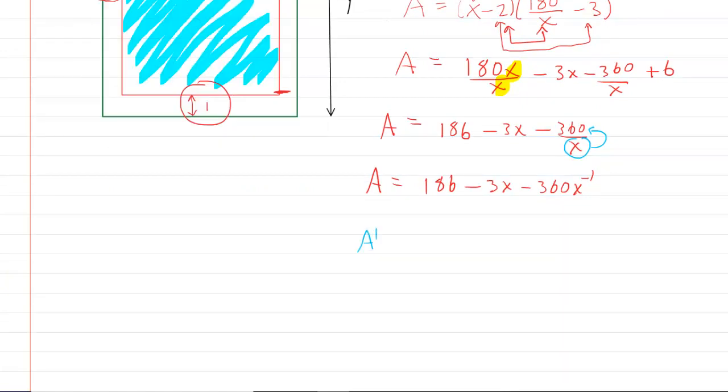We can write this as A prime. The derivative of a constant is just 0. The derivative of minus 3X is negative 3. And then here you've got to do the power rule. So we'll drag the negative 1 down, multiply it by negative 360 to make positive 360X raised to the power of negative 2.